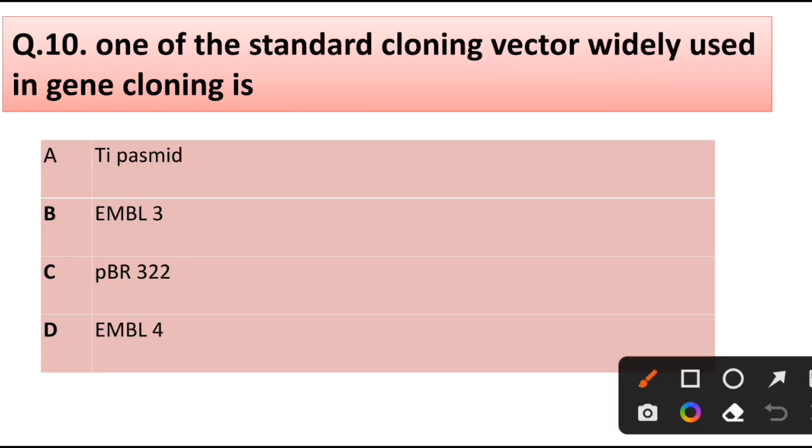Question number 10. One of the standard cloning vectors widely used in gene cloning is: Ti plasmid, EMBL3, pBR322, or EMBL4. Correct answer is option C, pBR322.